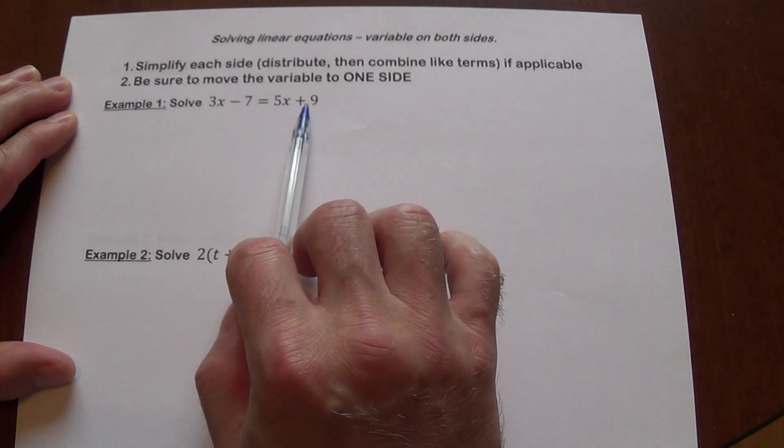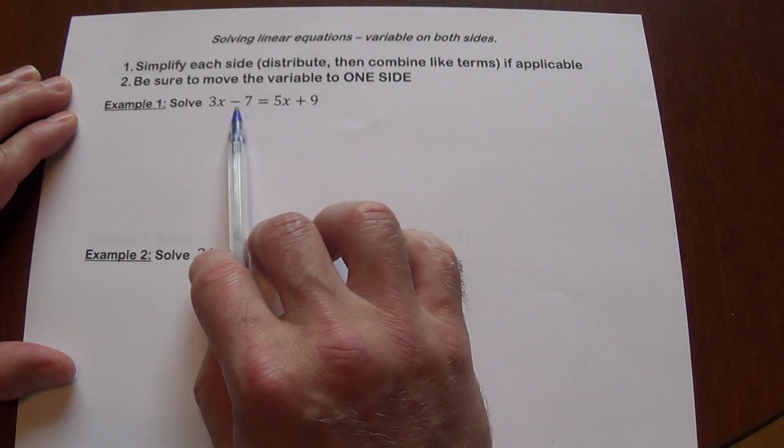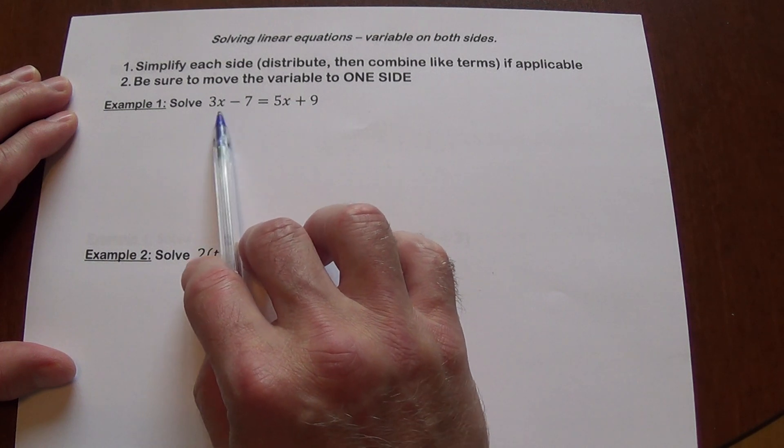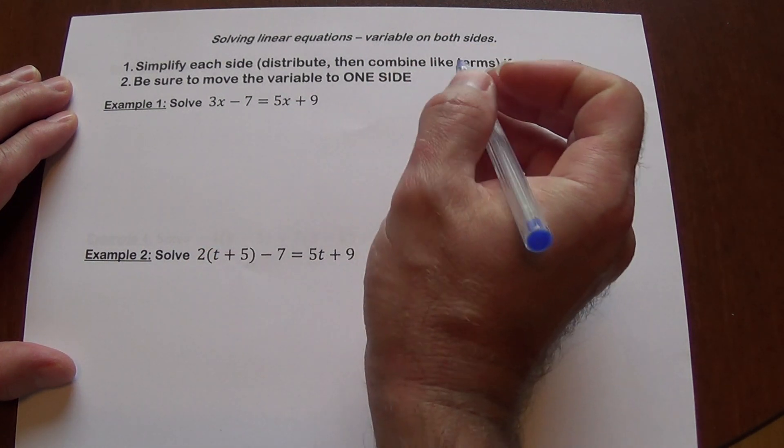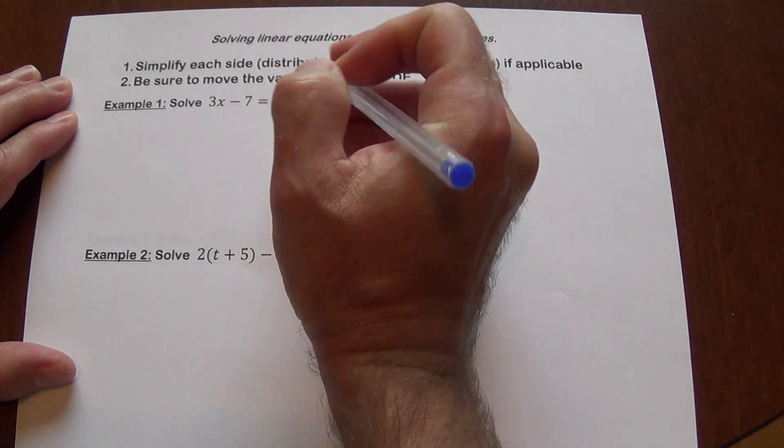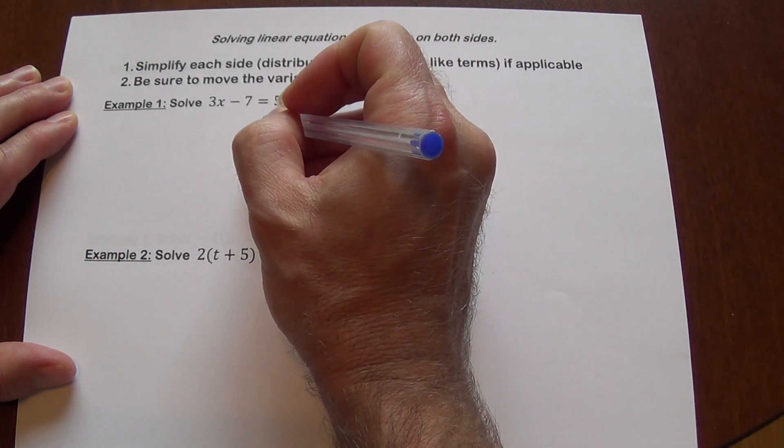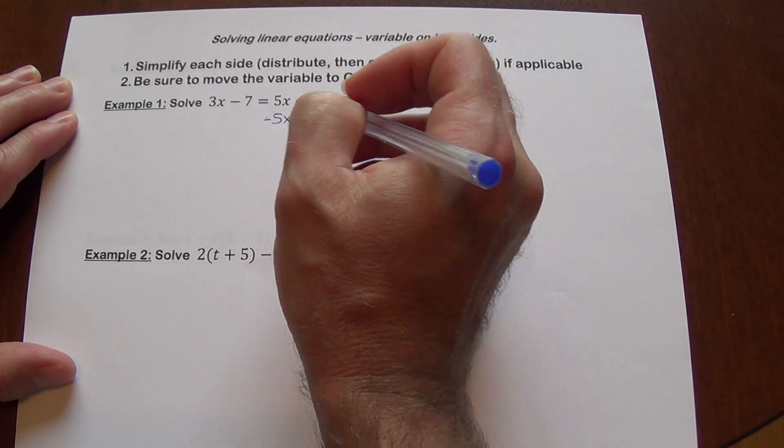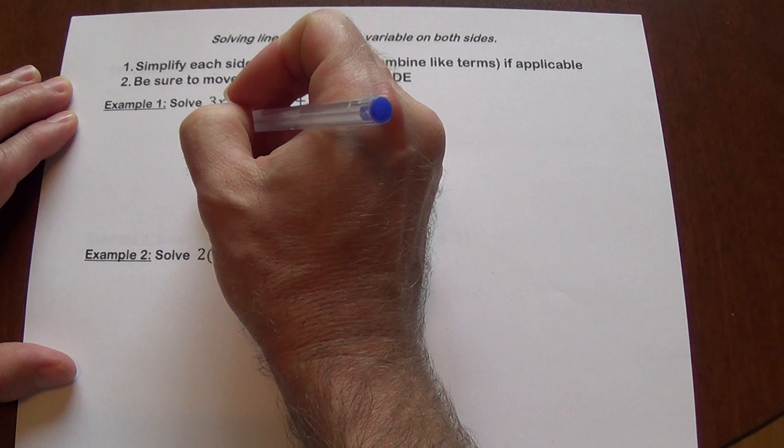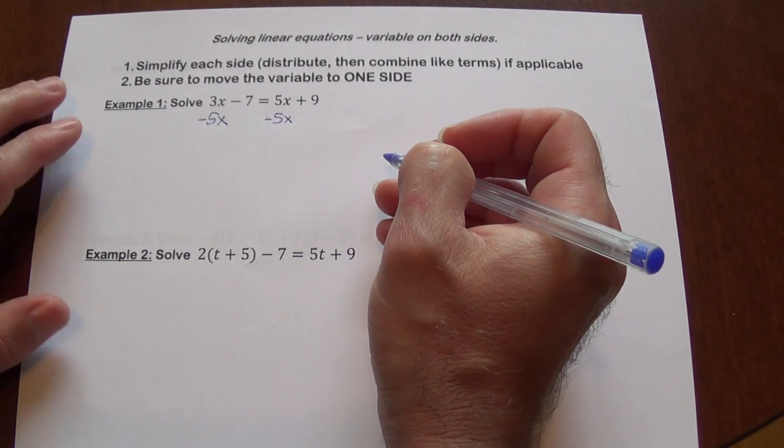You got 3x minus 7 equals 5x plus 9. We can't really combine anything here. There are no like terms and you don't have any like terms here. So we are going to skip step one. So you need to move the variable on both sides. It's your choice. I'm just going to keep it consistent and I'm going to get rid of my variables on the right. So if I subtract 5x, that's going to take care of that.